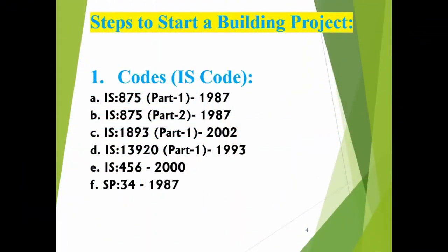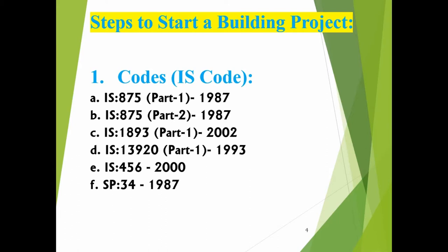Now I am going to show you different IS codes and software used to perform the building project. The IS codes are: IS 875 Part 1 (1987) for unit weights of building materials; IS 875 Part 2 for imposed loads; IS 1893 Part 1 (2002) for the earthquake code; IS 13920 for ductile detailing of reinforced concrete; IS 456 (2000) for design of building elements; and SP 34 (1987) for detailing of building elements.